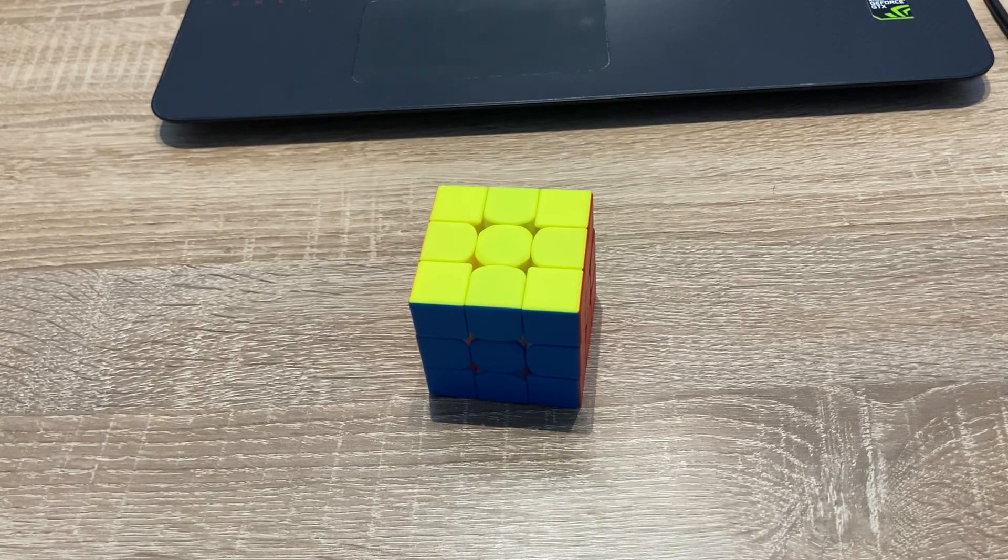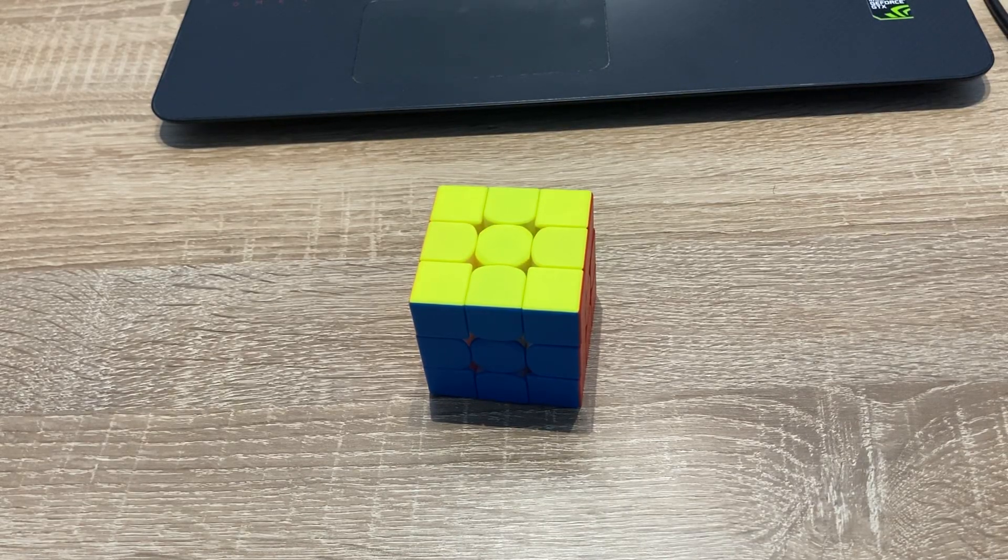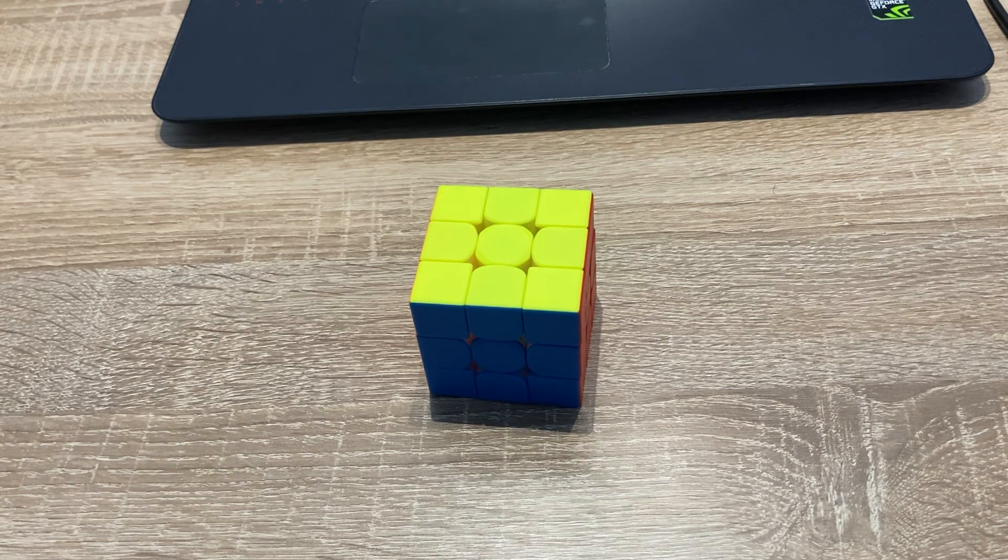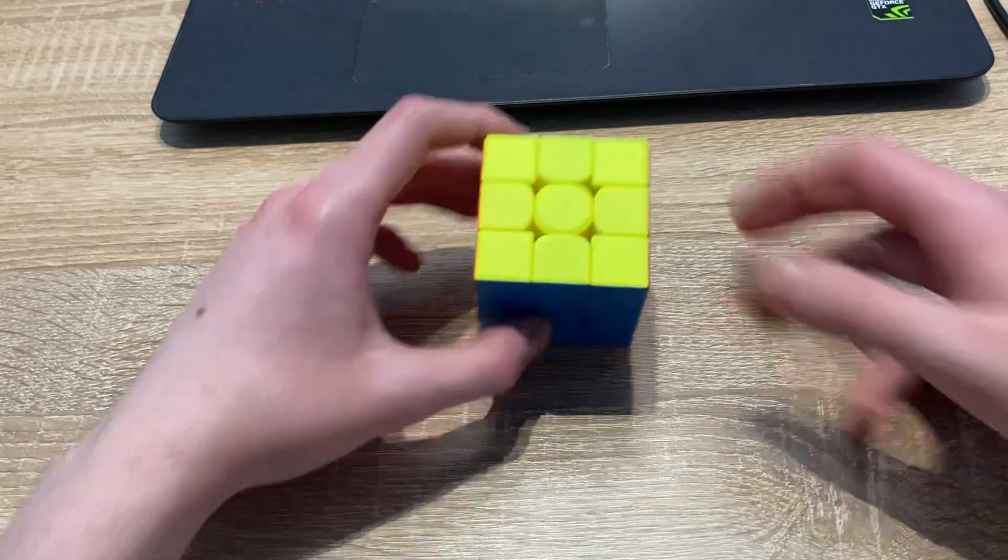Hi guys, in this video I'm going to do five 3x3 example solves. I'm using CFOP and my global is low to mid 7, so let's get into it.